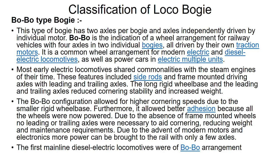Furthermore, it allows better adhesion because all the wheels are now powered. Due to the absence of frame-mounted wheels, no leading and trailing axles were necessary to aid cornering, reducing weight and maintenance requirements. Due to the advent of modern motors, more power can be brought to the rail with only a few axles. So the first main line designated motorways were of BoBo arrangement.